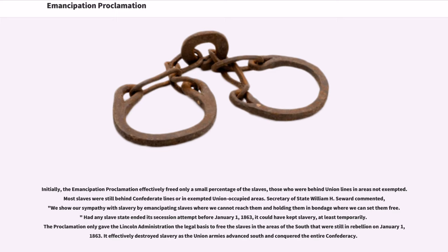Had any slave state ended its secession attempt before January 1, 1863, it could have kept slavery, at least temporarily. The proclamation only gave the Lincoln administration the legal basis to free the slaves in the areas of the South still in rebellion on January 1, 1863. It effectively destroyed slavery as the Union armies advanced south and conquered the entire Confederacy.